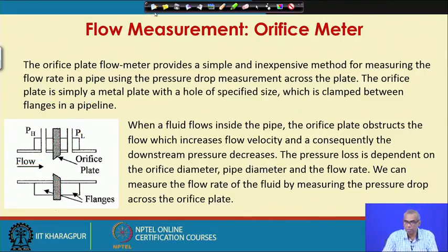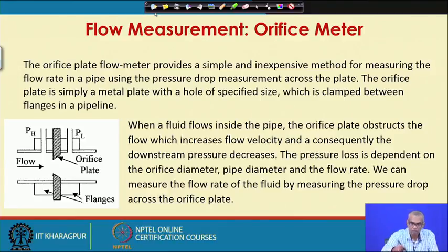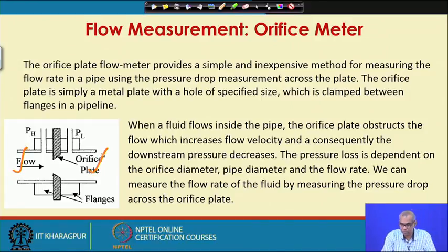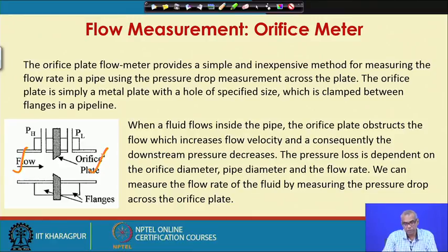When a fluid flows inside a pipe, the orifice plate obstructs the flow, which increases flow velocity and consequently the downstream pressure decreases. This is upstream and this is downstream. The pressure loss is dependent on the orifice diameter, pipe diameter, and the flow rate, but for a given orifice plate the pressure loss becomes dependent on the flow rate only.